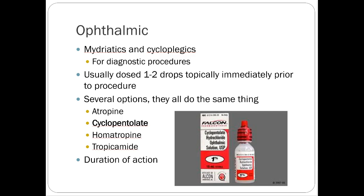For ophthalmic agents, atropine, cyclopentolate, and tropicamide are all ophthalmic anticholinergic drugs — they open up the pupil as mydriatic agents and help with ophthalmic procedures. They differ primarily in duration of action. Cyclopentolate and tropicamide are both relatively short-acting compared to atropine.